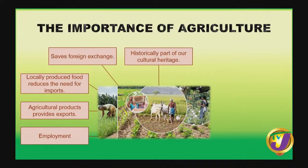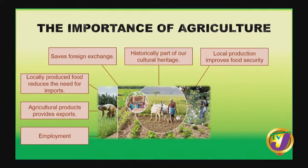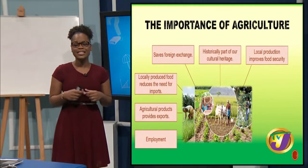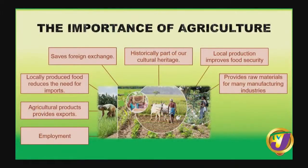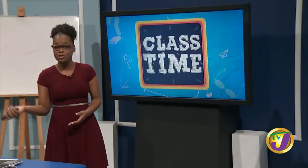Agriculture is part of our heritage — our first ancestors who settled on the land engaged in farming of some sort, and for many families farming remains the primary economic activity. Local production also improves food security, supplying all that is necessary for the growing demand of the immediate population. Agricultural produce is also used as raw materials for industries — for example, the True Juice factory relies on farming to get oranges and other fruits to make the juices we consume.